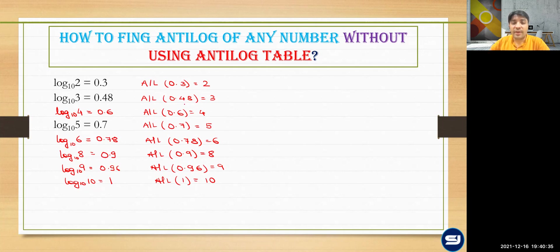So if we get some weird values, some random values, which are between these numbers, let's say we have a value to be found as antilog of 0.3952, somewhat like this. Now this value,